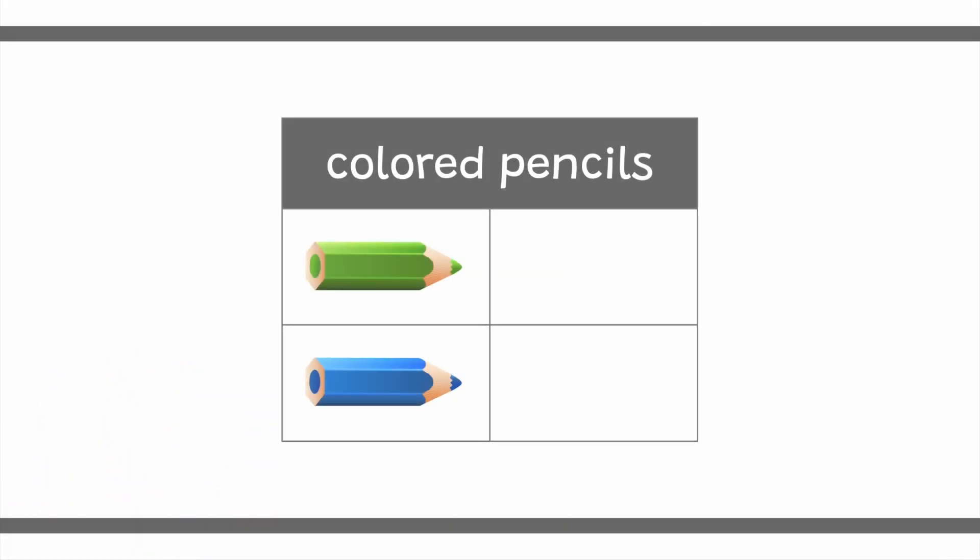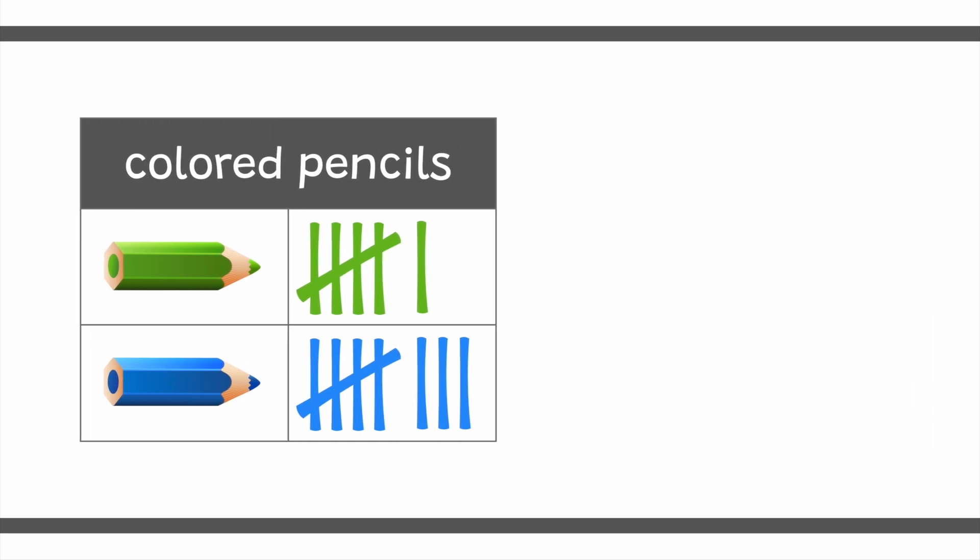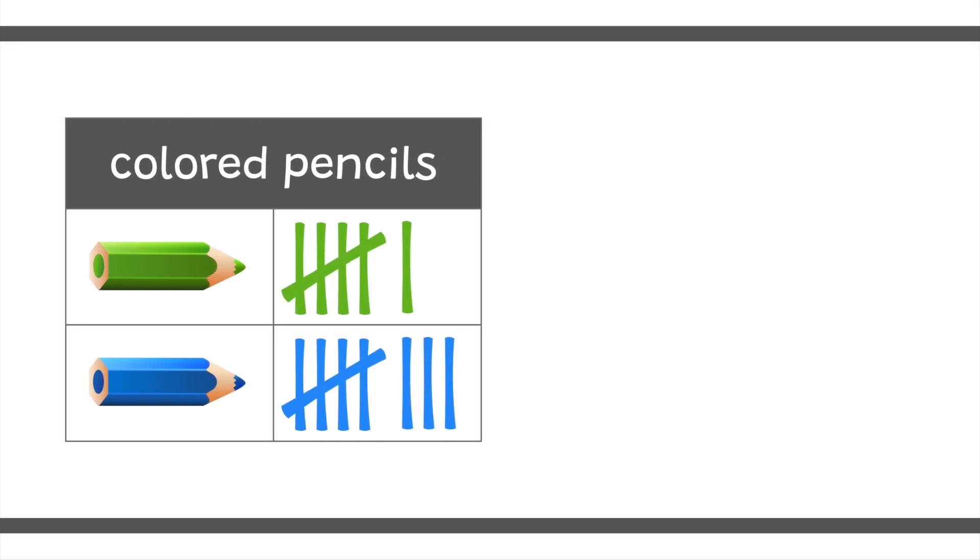Now let's take a look at a tally chart about how many colored pencils are in the bin at school. These tallies show how many green pencils there are. And these tallies show how many blue pencils there are. Let's find out how many of each colored pencil are in the bin. We'll start with the green pencils. Remember, we can count the first bunch as five since it has the sideways tally. Now we can count the extra one, six. There are six green pencils in the bin.